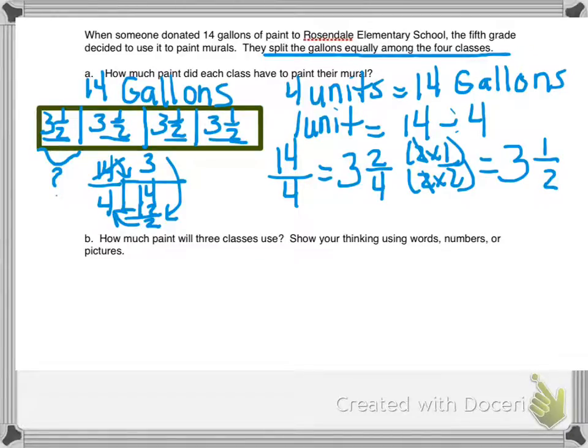Now let's look at part B. Part B says, how much paint will three classes use? Show your thinking using words, numbers, or pictures. Now I'm going to use the information that I found in part A to help me with part B. So here's the key here: three classes.